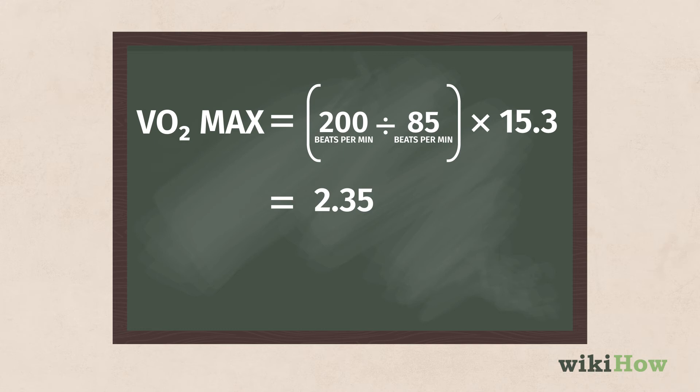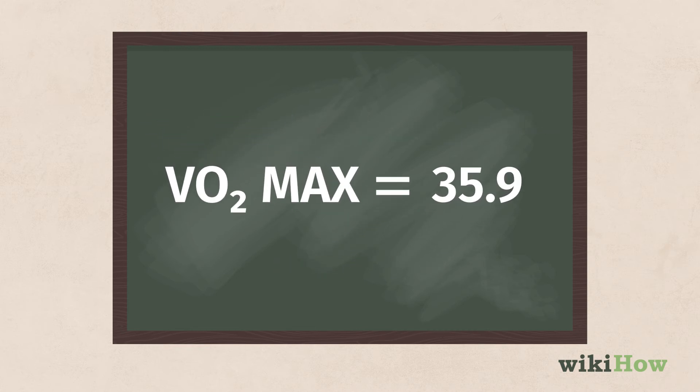Then, you would multiply 2.35 by 15.3 and get 35.9. Therefore, your VO2 max would be 35.9.